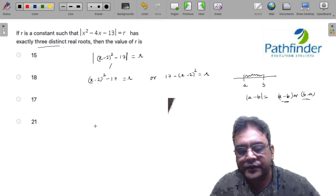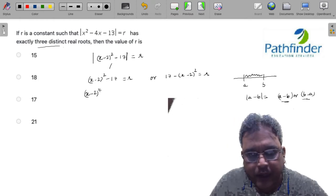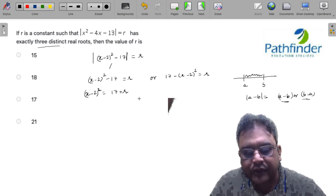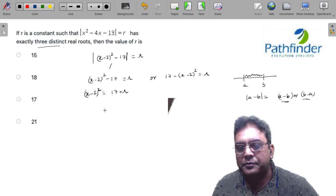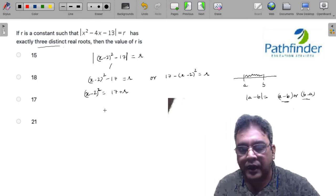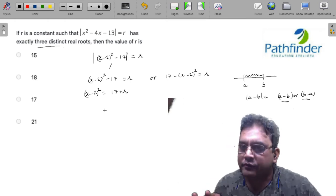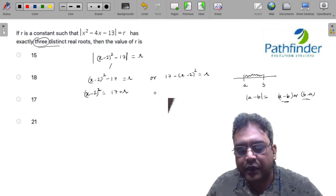So these are two possibilities. Here I have (x - 2)² = 17 + r. From the left-hand side I can see that r could have any possible value and there will be two roots for sure, but we have three distinct real roots, so now let us look at the other equation.